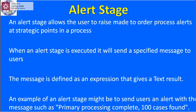The alert stage allows the user to raise process alerts at strategic points in a process. When an alert stage is executed, it will send a specified message to users. The message is defined as an expression that gives a text result — for example, an alert message such as 'Primary processing is complete: 100 cases.'